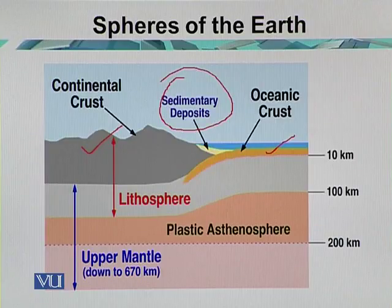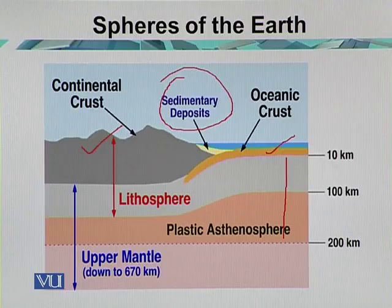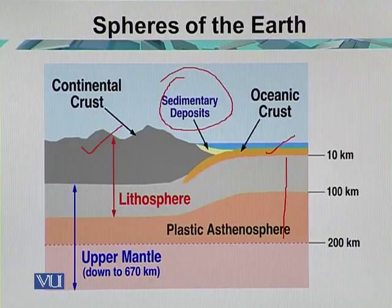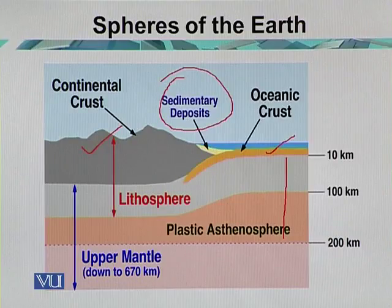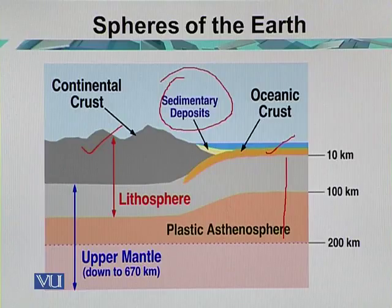The material underneath the continental crust and the oceanic crust is called the asthenosphere. The Lithosphere is composed of the continental crust, oceanic crust, and the part of the surface beneath both. This environment is composed of certain types of rock structures which are exposed due to certain geomorphic processes.